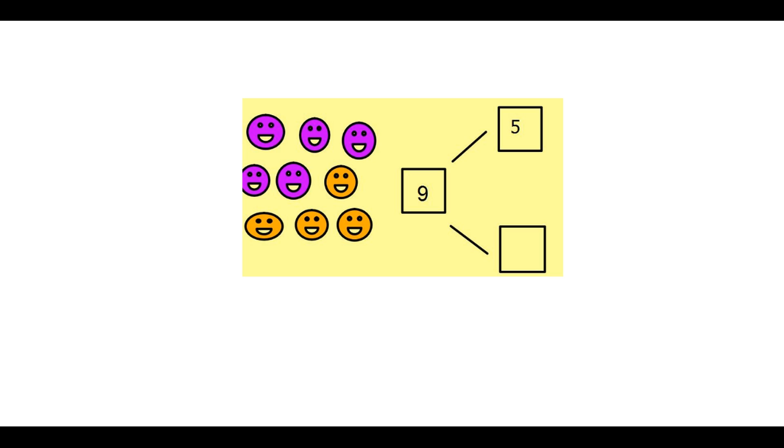Here we have a slightly harder challenge as it involves the children identifying the missing part. And it makes them think a bit more closely about the information they already have. So you can see here we already have the whole which is the number of, in this case, faces that we have altogether. So the whole is nine.